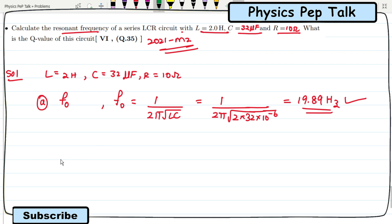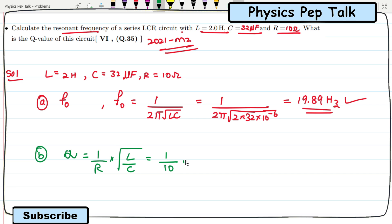For part B, they are asking to find the Q factor. Q is equal to 1 by R into root of L by C, which is 1 by 10 into root of 2 henry by 32 into 10 power minus 6. On substituting all these values, the value of Q is found out to be 25. This is the required solution for this exercise.